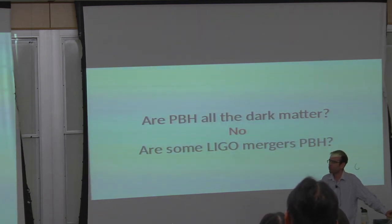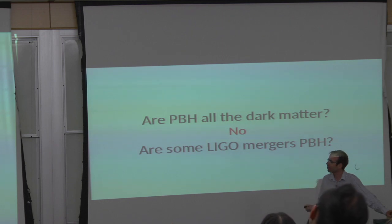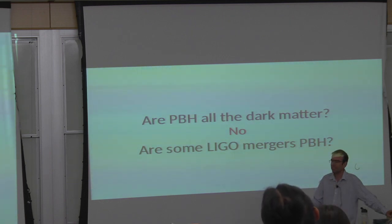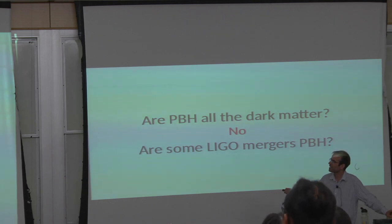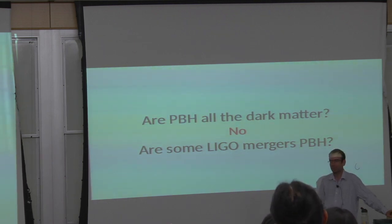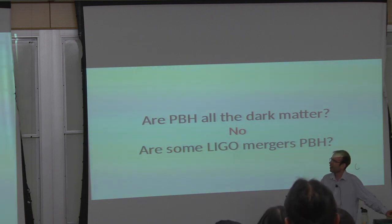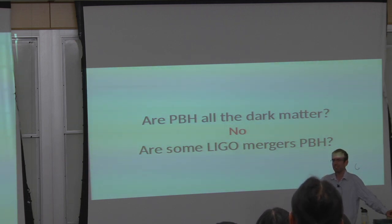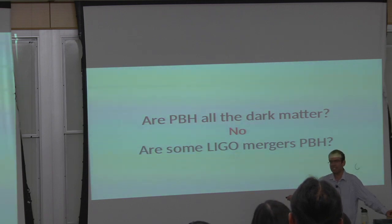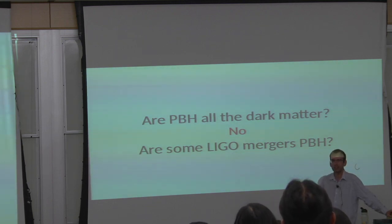So I didn't answer the question: did LIGO detect dark matter? You can split this into two sub-questions. First: are primordial black holes all the dark matter? The answer is no — the lensing survey says they have to be at most 30% of the dark matter. Second: are some of the black holes detected by LIGO merging actually primordial? I can't answer this precisely because I had an order of magnitude estimate, not percent-level accuracy.